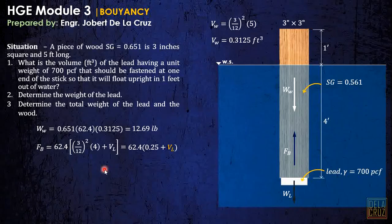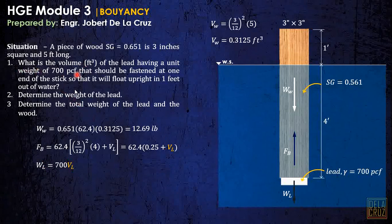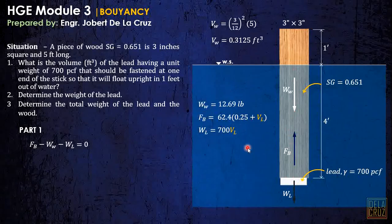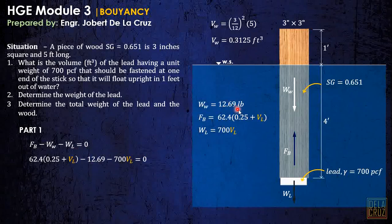The weight of the lid is gamma of the lid times the volume of the lid — that is 700 times the volume of the lid. By equating equilibrium, buoyant force minus weight of the wood minus weight of the lid equals zero. Substituting all defined variables, we calculate the volume of the lid as 4.56 times 10 raised to negative 3 cubic feet.